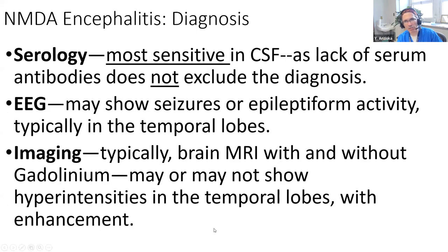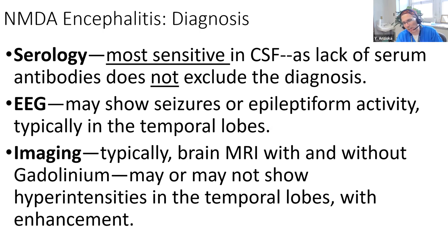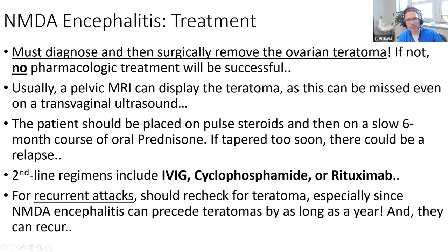How do you diagnose NMDA encephalitis? You have to look at the CSF - there's no two ways about it. Serum antibodies are not sensitive; you can have normal serum antibodies and still have the disease. An EEG might show seizures. A brain MRI might show T2 hyperintensities in the temporal lobes with possible enhancement, but it may be normal, as in the initial patient presented.